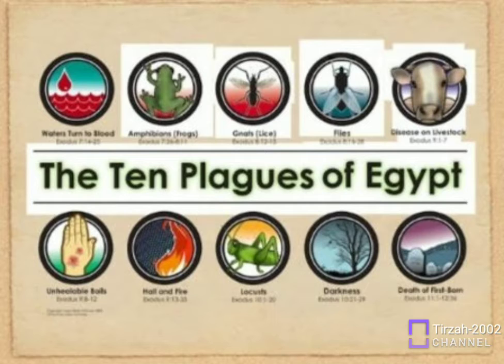Gnats — All the dust of Egypt turns into gnats. The result: The magicians say it is the finger of God, but Pharaoh's heart is still hard and stubborn. Exodus 8:16-19. Plague 4.